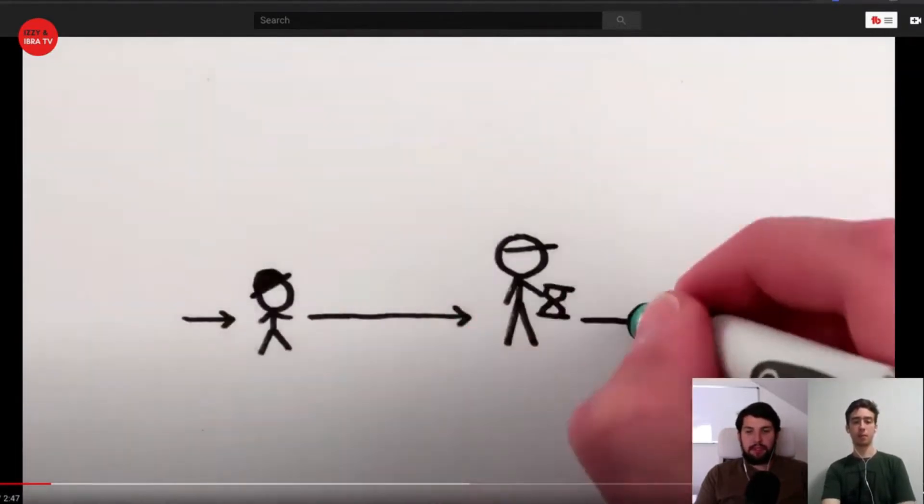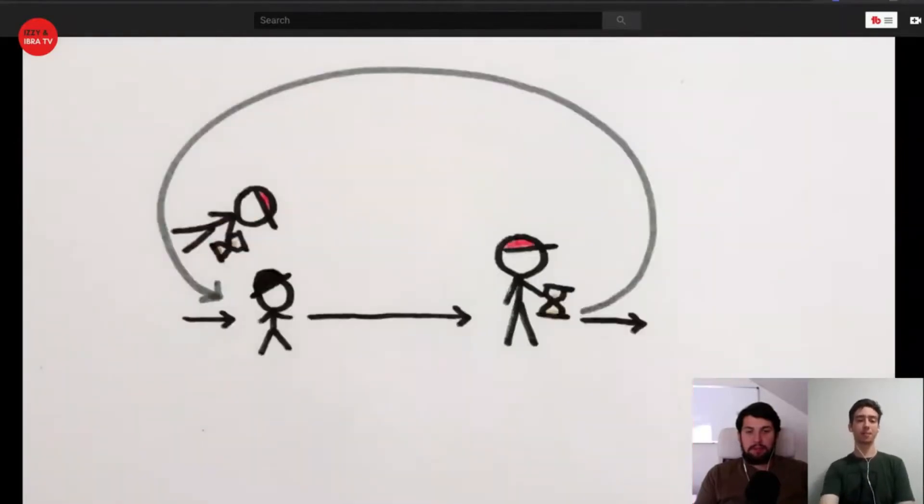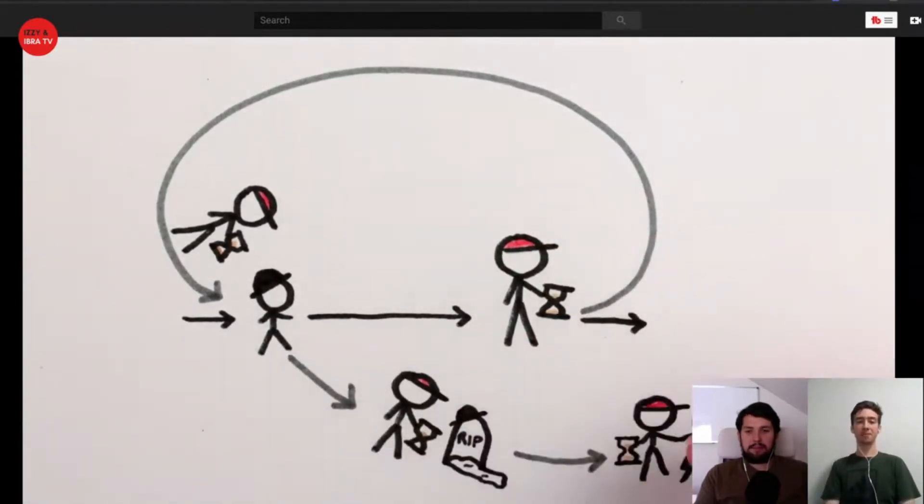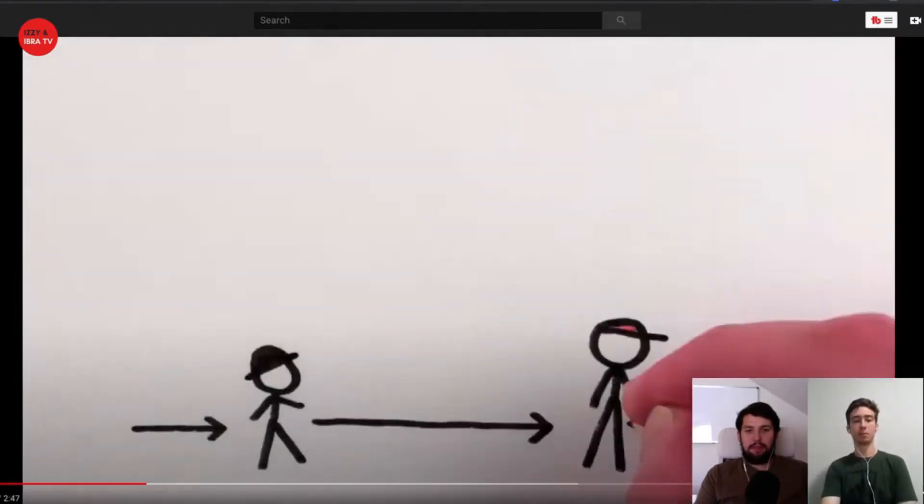The simplest resolution to the grandfather paradox is that when you go back in time, you're actually not going back into your own history but to a copy. And everything you do there influences the future of that universe, not your own past. But that's boring because it just avoids the paradox.